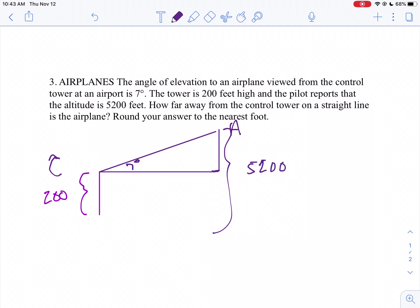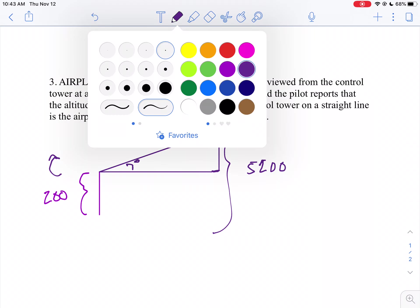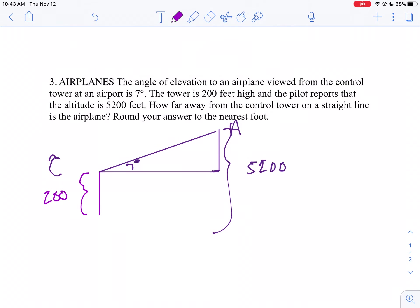Which really means the vertical distance between the control tower and the airplane is 5,000 feet. It's definitely not drawn to scale.